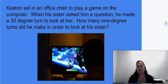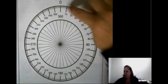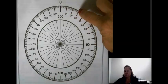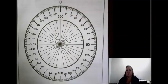Keaton sat in an office chair to play a game on the computer. When his sister asked him a question, he made a 30 degree turn to look at her. How many one degree turns did he make in order to look at his sister? It's not a trick question. It's just super simple. He did 30 one degree turns to see his sister.